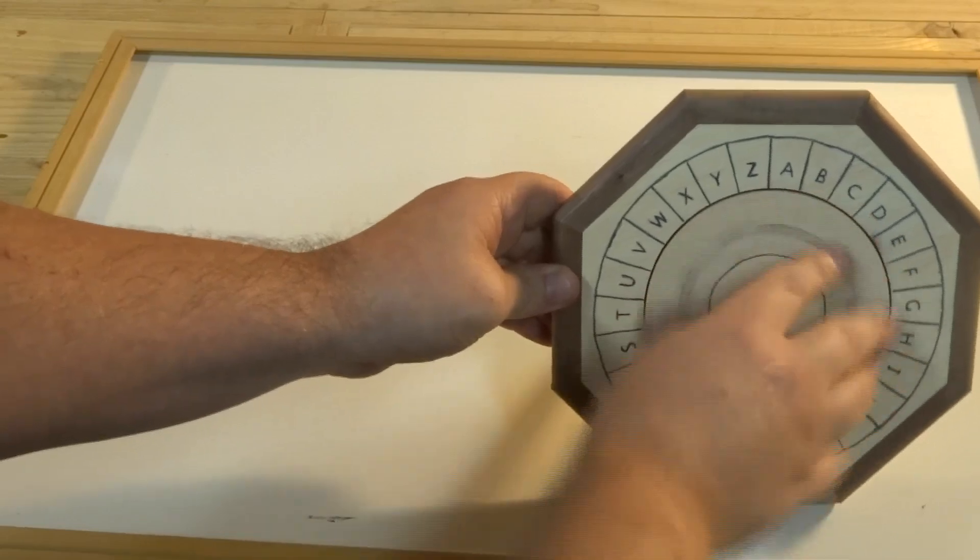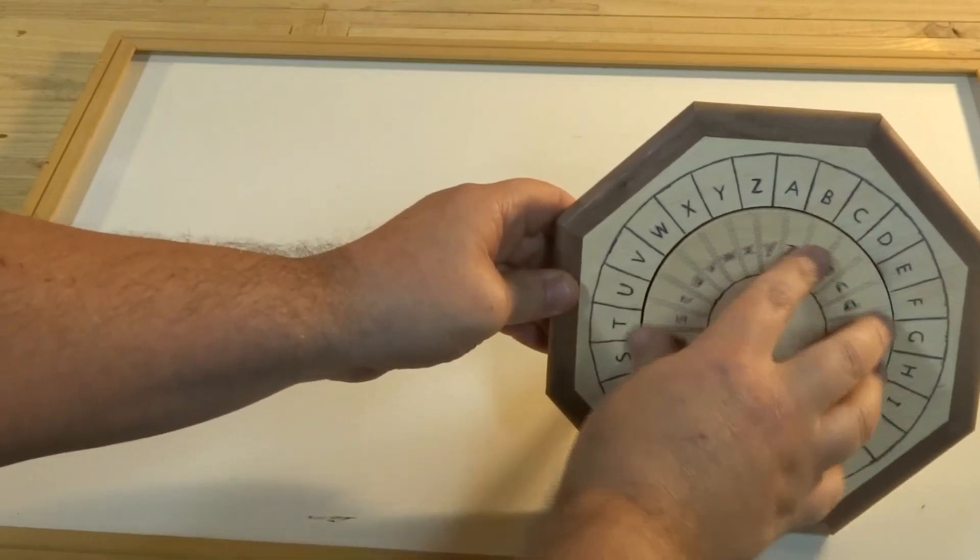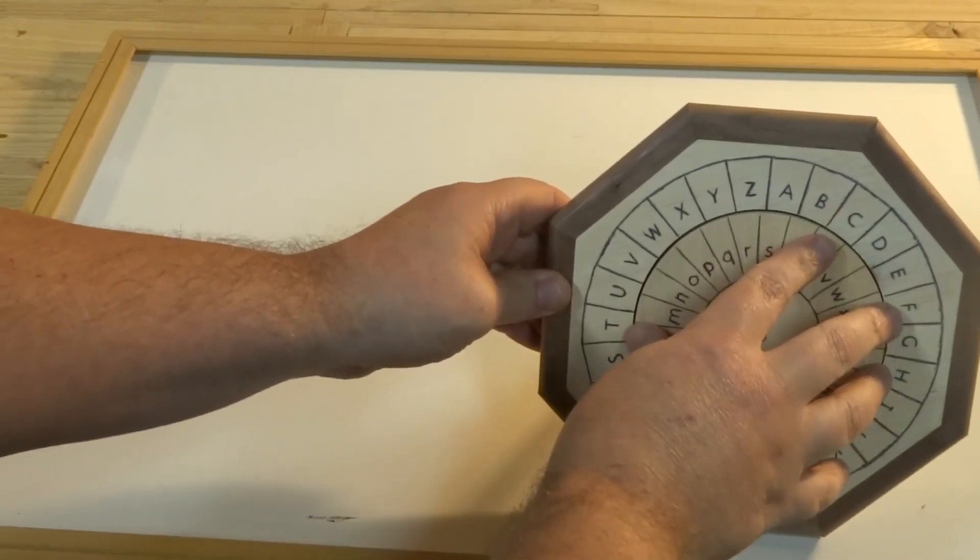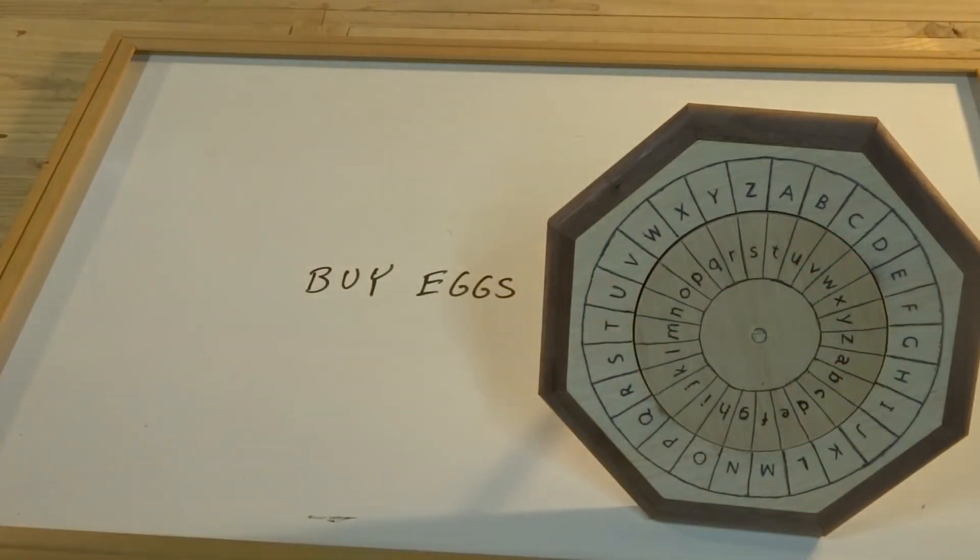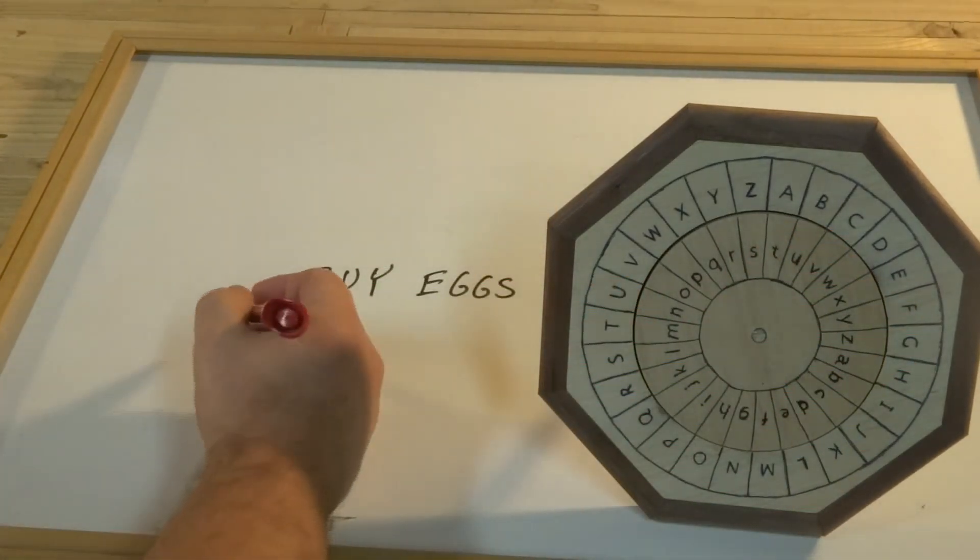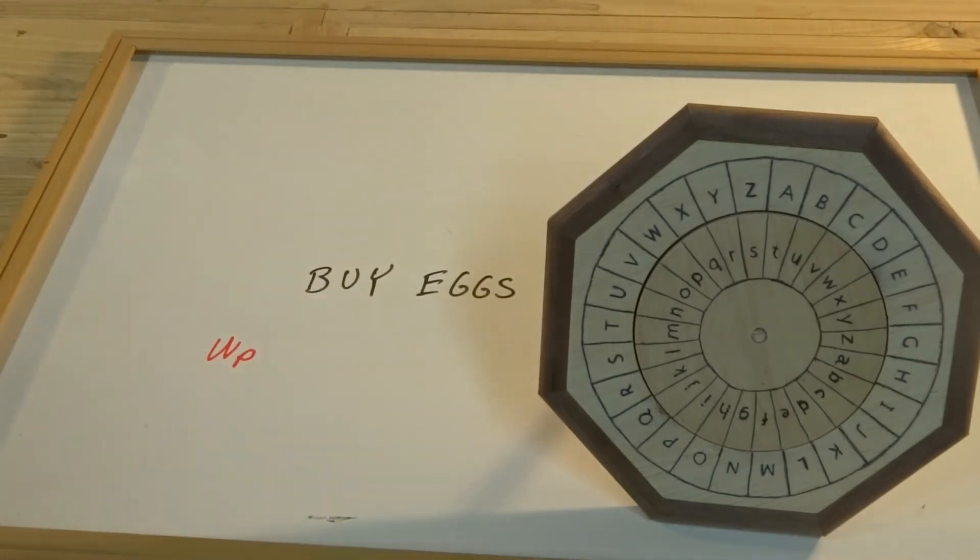So we'll just randomly spin this around, how about if we pick WP. That sounds good. And then we have to write that down, that's the beginning of our encoded message.